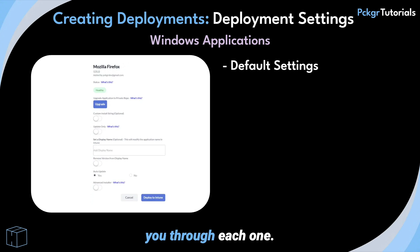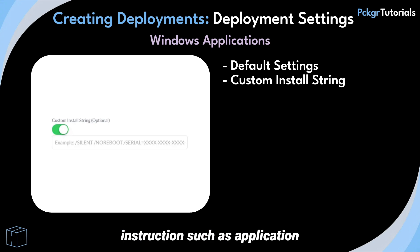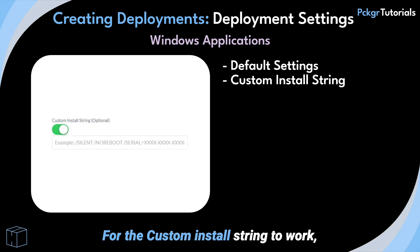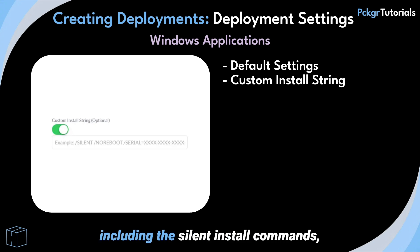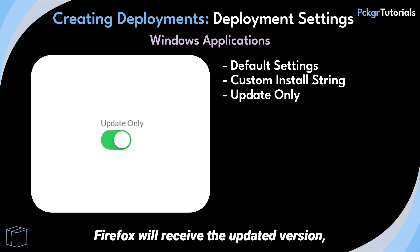The custom install string setting allows you to override the install string, where you can add further instructions such as application registration keys or license keys. For the custom install string to work, the full string needs to be entered, including the silent install commands, ensuring the file name is left out.